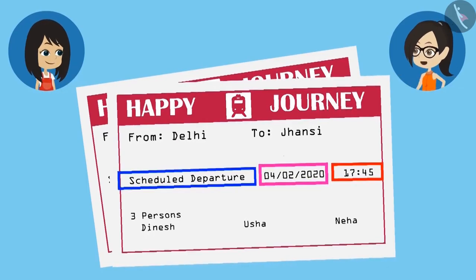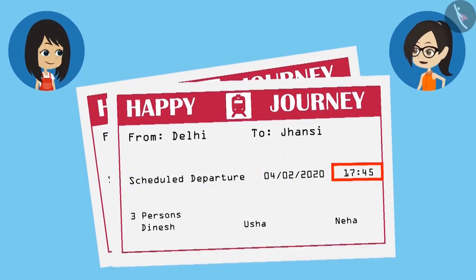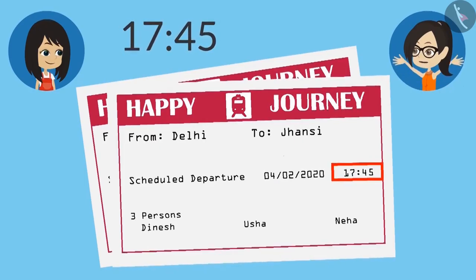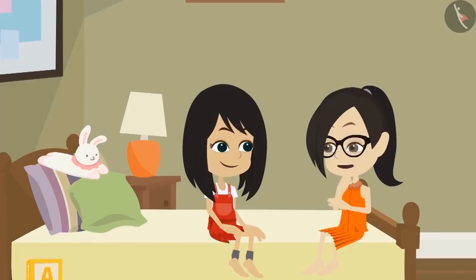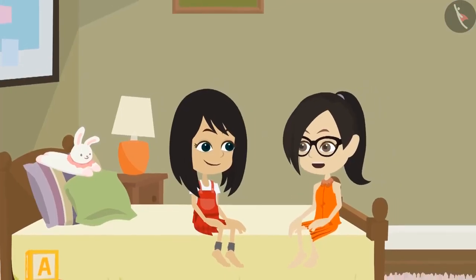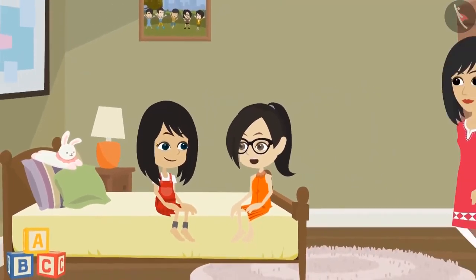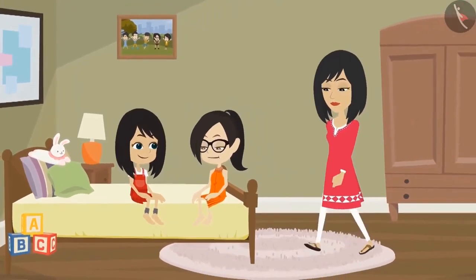Time must be written in the format of time, but it's not. See, the time is written as 45 minutes past 17, and a.m. or p.m. is also not written along with it. Let's go and ask your mummy what is written here.